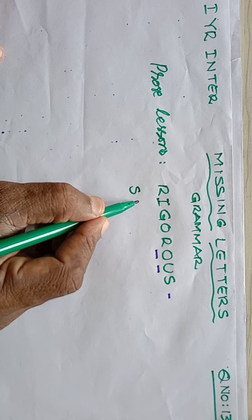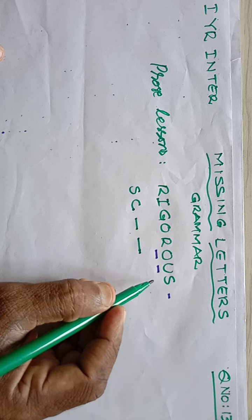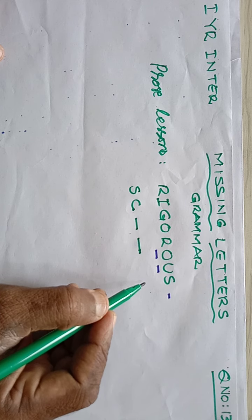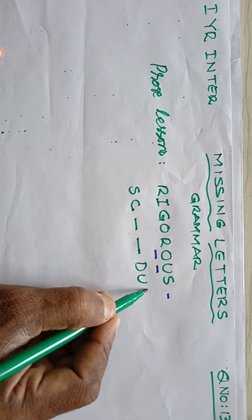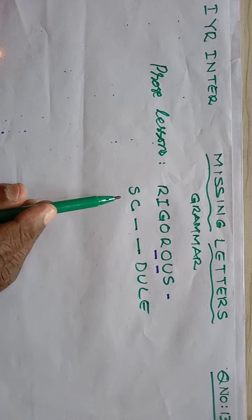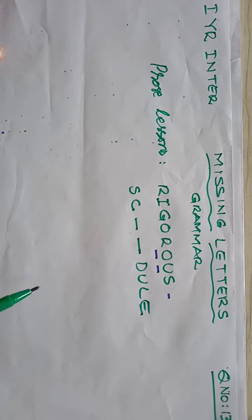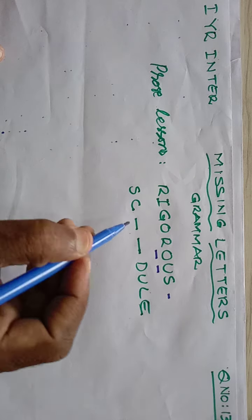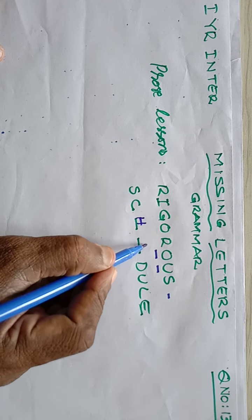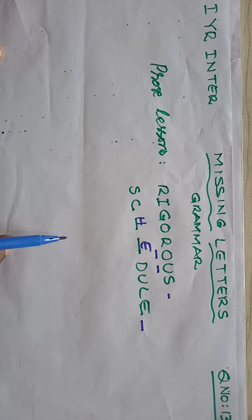Here is another example: S-C-dash-dash-dash-D-U-U-L-E. What can the word be? From our lesson 'Aim for the Stars' and 'Sign on a Wall', we can easily guess the missing letters are C-H-E, making the word 'schedule'. Schedule is the word.